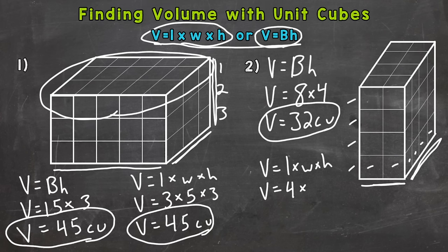Times the width here, which is one, two. And the height we already determined is one, two, three, four. So we get to a volume of four times two is eight times four is 32 cubic units.